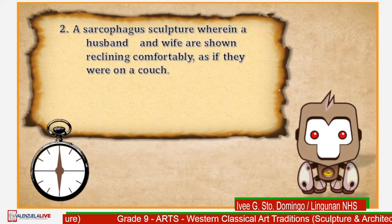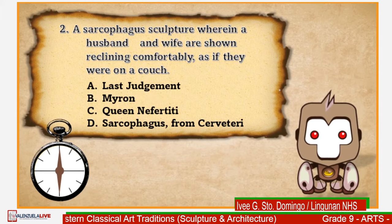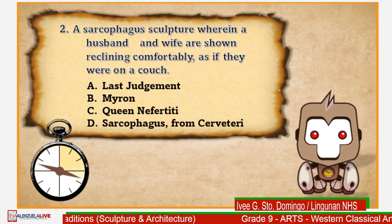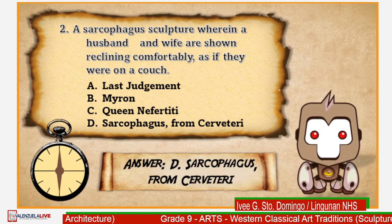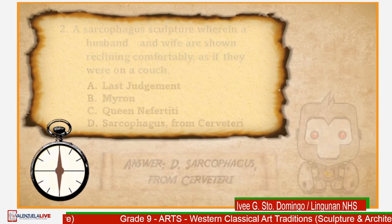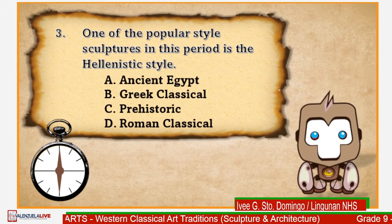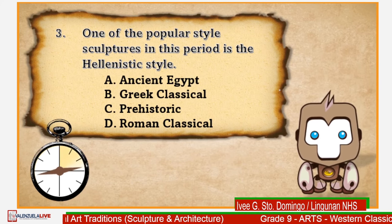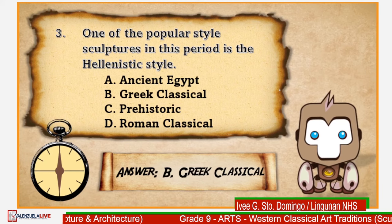Number 2: A sarcophagus sculpture wherein a husband and wife are shown reclining comfortably as if they were on a couch. Letter A: The Last Judgment; B: Myron; C: Queen Nefertiti; D: Sarcophagus from Cerveteri. If you answered letter D, Sarcophagus from Cerveteri, that is right. Number 3: One of the popular style sculptures in this period is the Hellenistic style. Letter A: Ancient Egypt; B: Greek Classical; C: Prehistoric; D: Roman Classical. If you answered letter B, Greek Classical, you are also right.